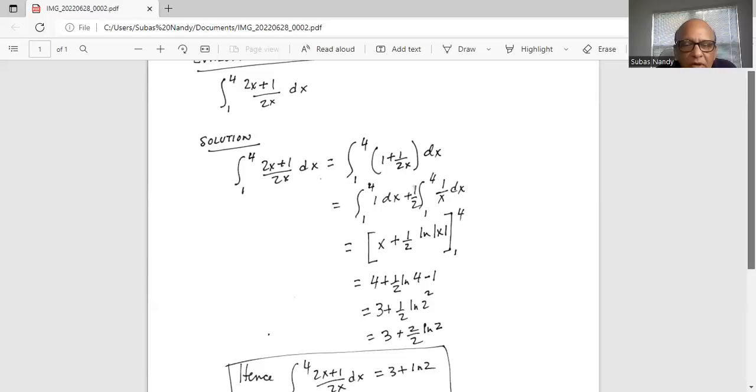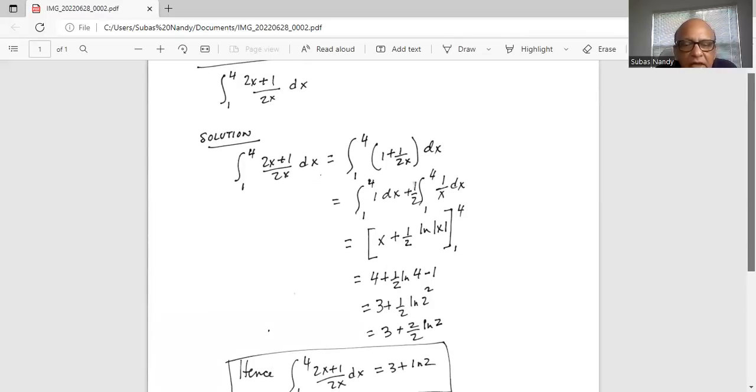We have 4 minus 1 plus half ln 4. ln 4 is ln 2 squared, so 4 minus 1 is 3 plus half ln 2 squared. Natural logarithm of 2 squared can be written with the exponent in the front, so it's 2 ln 2, and half of that is ln 2.